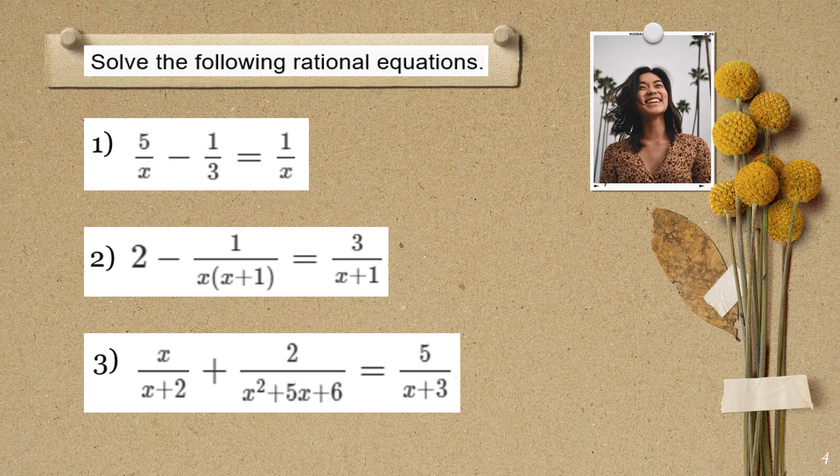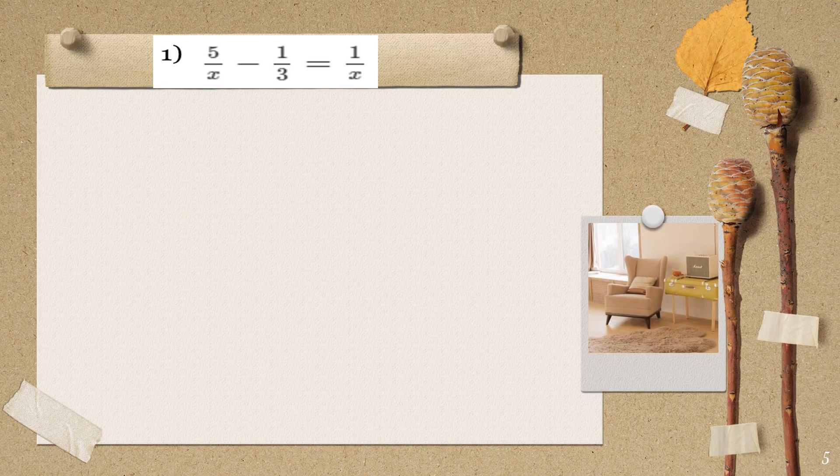We are given three problems to solve, and I will discuss them one at a time. Let's start answering: 5/x minus 1/3 is equal to 1/x. The first step is to factor out the denominators if possible. In this example, we have denominators x, 3, and x. They are already simple numbers and cannot be factored out.